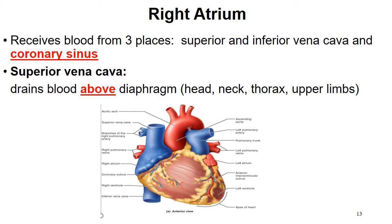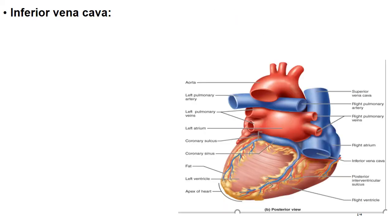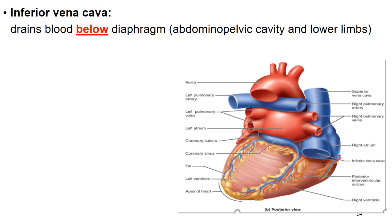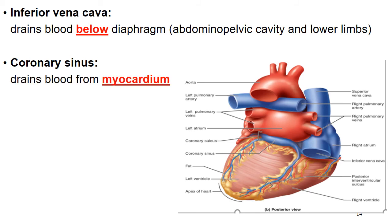Veins carry blood towards the heart from below the diaphragm — the stomach, liver, spleen, reproductive organs, etc. The last source is the heart itself: the coronary sinus, which you can see in this figure, drains blood from the myocardium, the heart muscle. This picture is a posterior view, so you're looking at the heart from behind. It's also a good indicator of where the pulmonary veins and arteries are located.